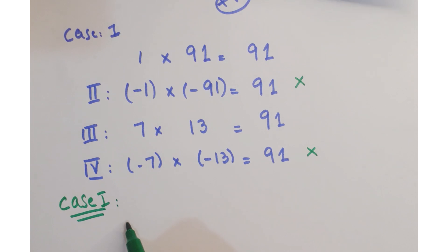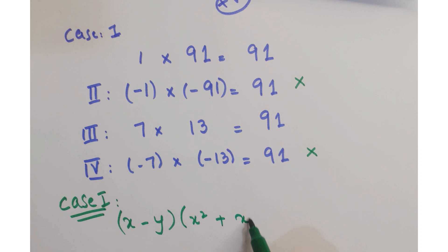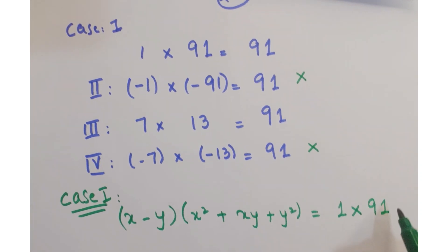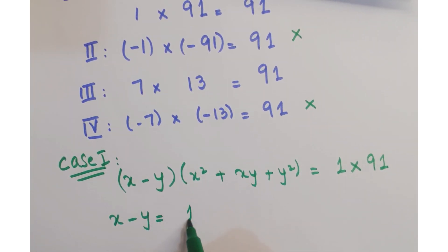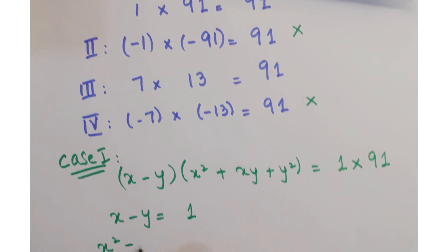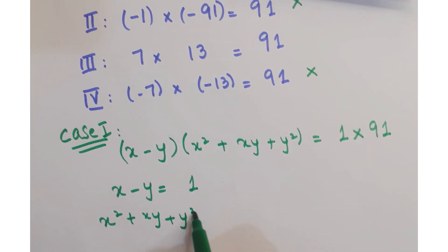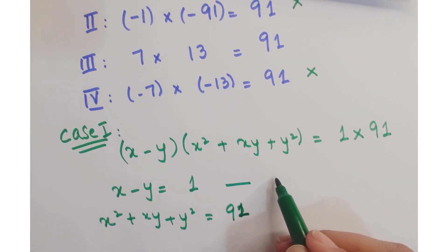We will work on Case 1 first. According to Case 1, x minus y times x squared plus xy plus y squared equals 1 times 91. So we have x minus y equals 1 — call this equation 1 — and x squared plus xy plus y squared equals 91 — call this equation 2.